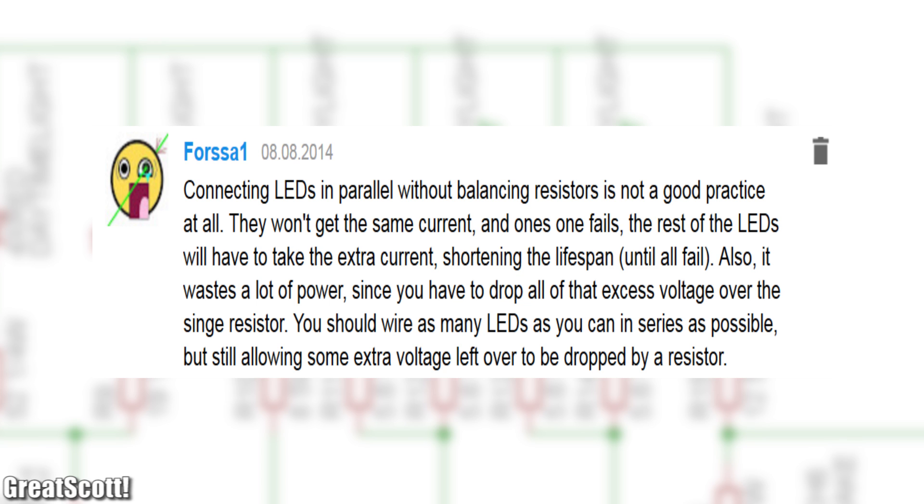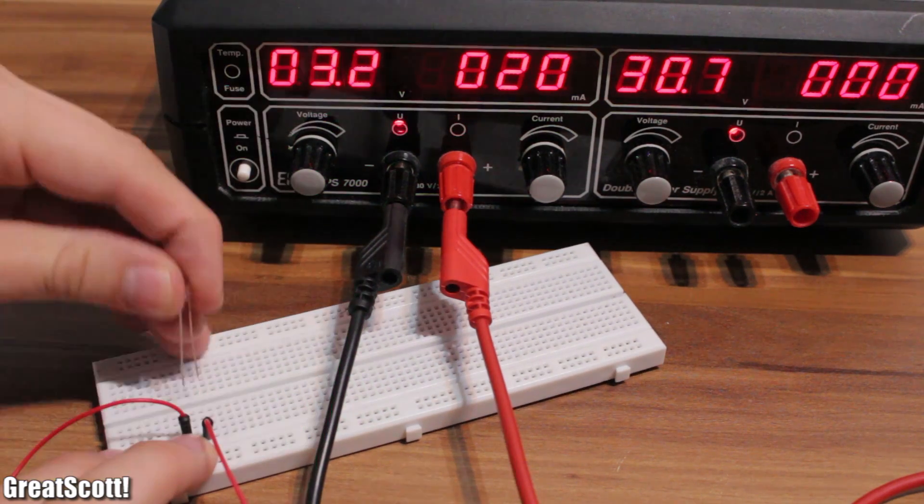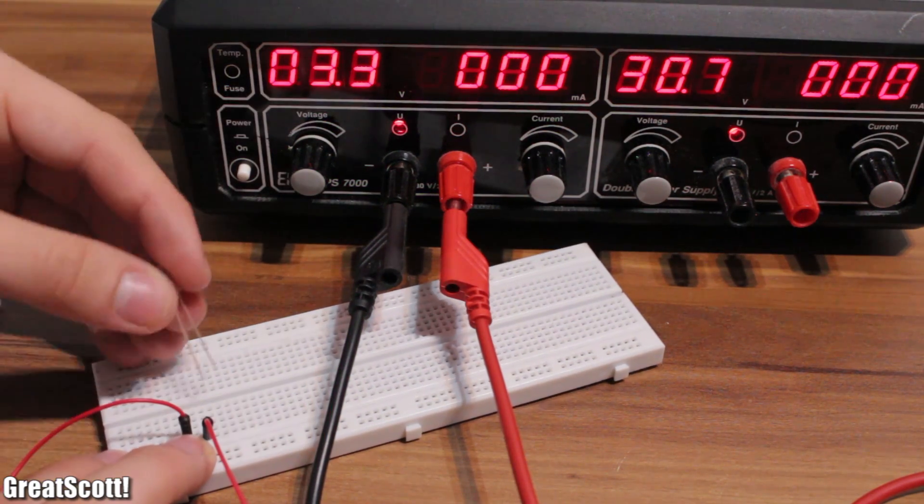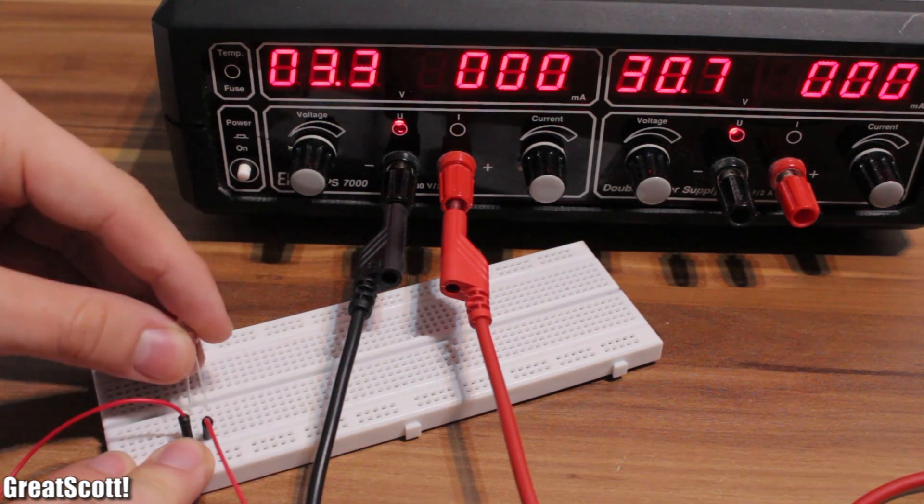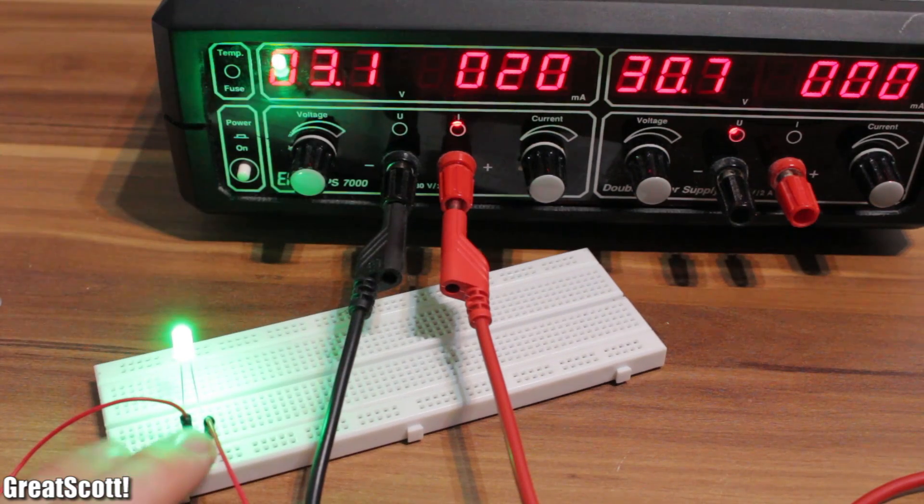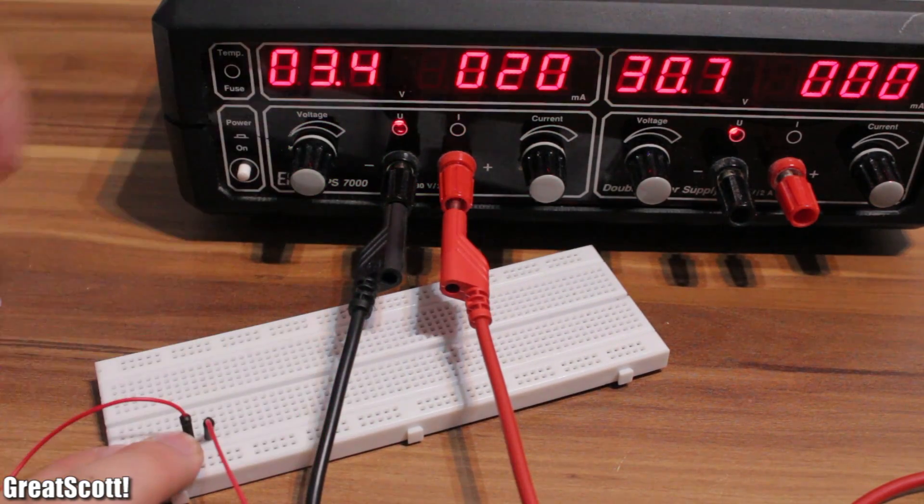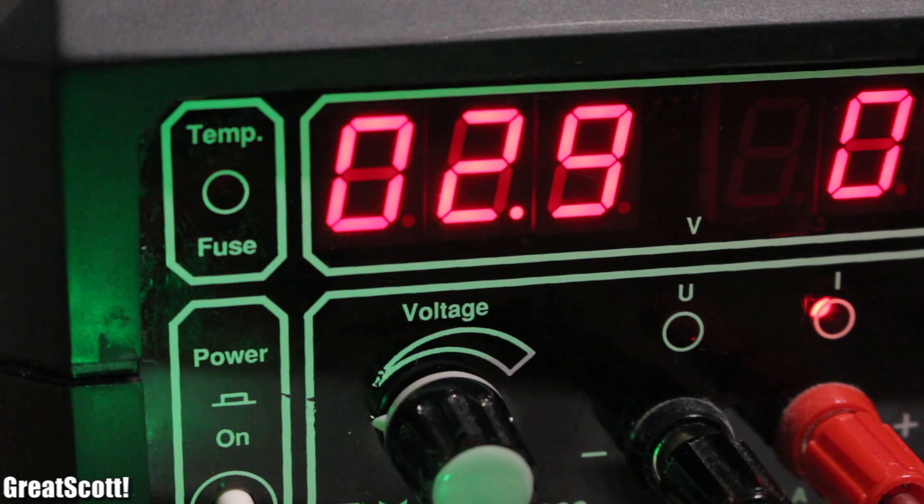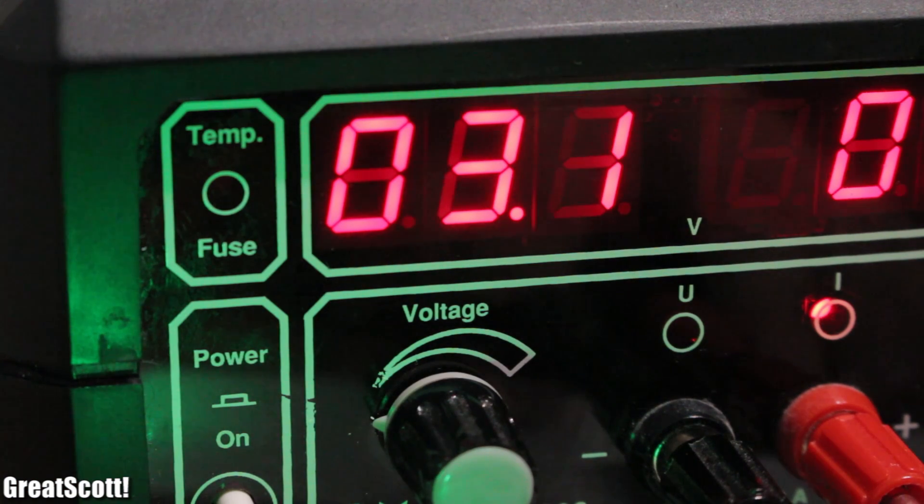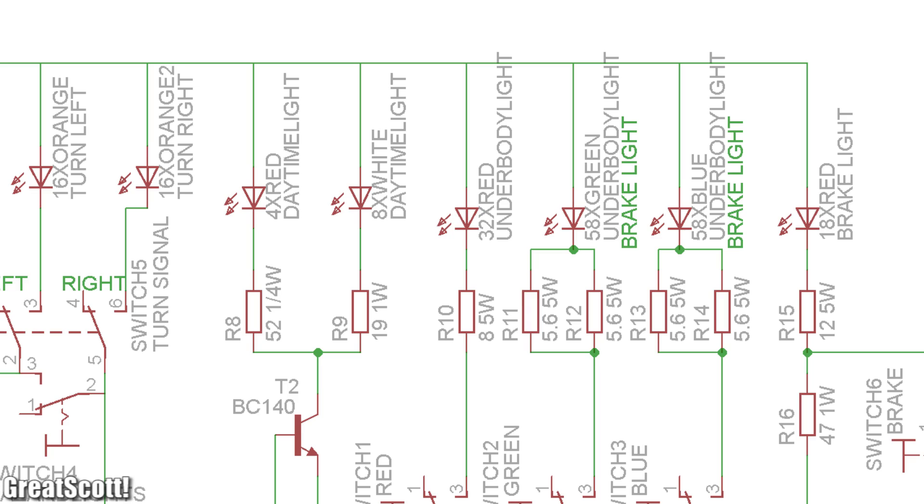And here's why. Even though the forward voltage should always be 3 volts with those LEDs, it is not. Every LED is different, and here in my case the forward voltage varies between 2.9 volts and 3.1 volts. With this many LEDs in parallel...